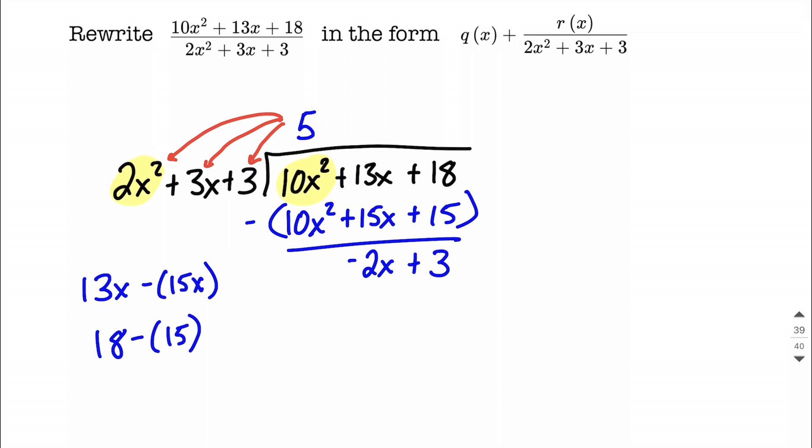Let's go ahead and identify the 5. We call that our quotient. And that's going to correspond to the q of x. And then the negative 2x plus 3, we're going to call that the remainder. That's going to correspond to the r of x.